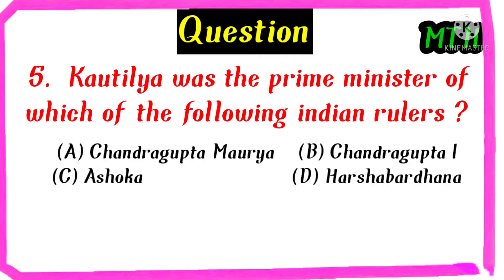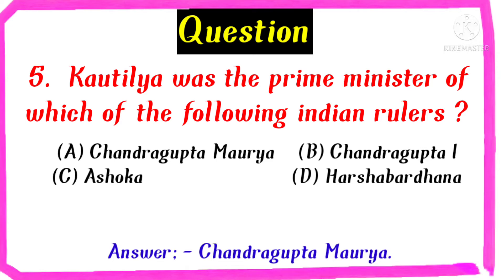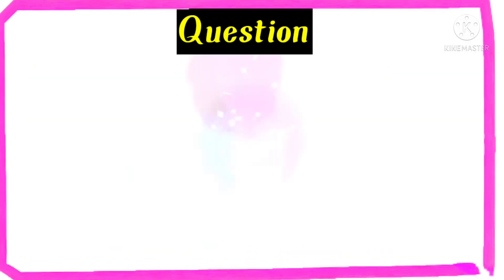Kautilya was the Prime Minister of which of the following Indian rulers? Chandra Gupta Moriya, Chandra Gupta I, Ashoka, Harshvardhan. The right answer is Chandra Gupta Moriya.